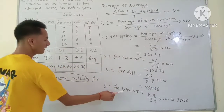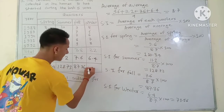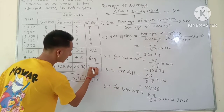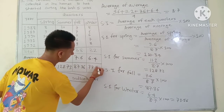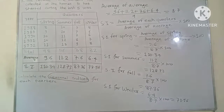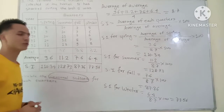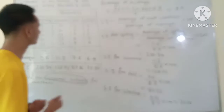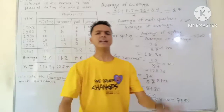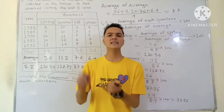So the seasonal indices are: Spring 110.34, Summer 128.73, Fall 87.36, Winter 73.56. We have a complete solution.